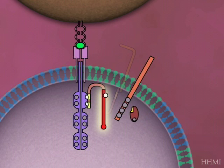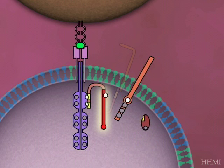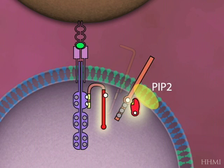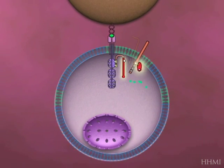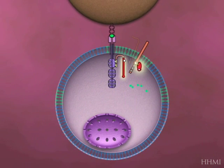LCK phosphorylates and activates the ZAP70 enzyme. The activated ZAP70 can then phosphorylate a number of proteins, one of which is this linker protein called LAT. LAT provides a docking site for phospholipase C gamma-1 and activates it. The enzyme hydrolyzes phospholipids within the plasma membrane called PIP2, releasing a number of intermediates, one of which is the second messenger IP3.